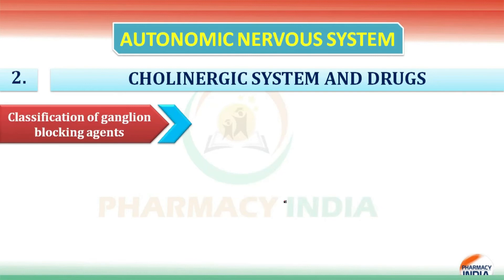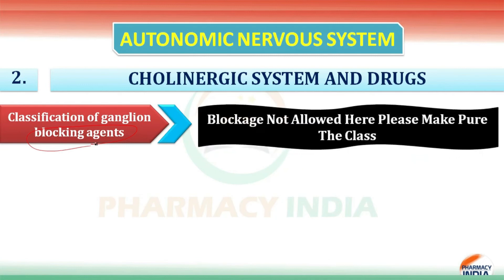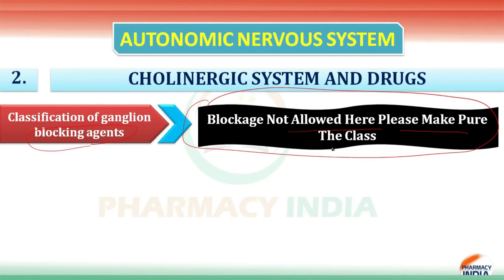The next class is ganglionic blocking agents. The mnemonic for this is: 'Blockage not allowed here, please make pure the class.' 'Blockage' indicates blocking agents. Let's now discuss the individual classes.